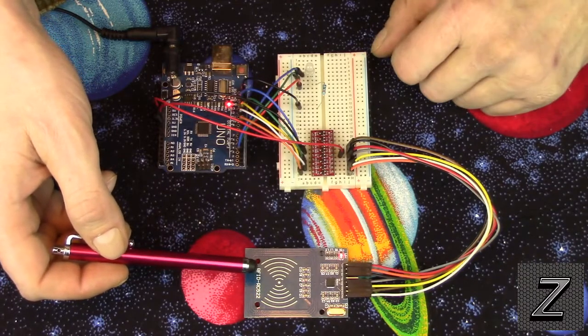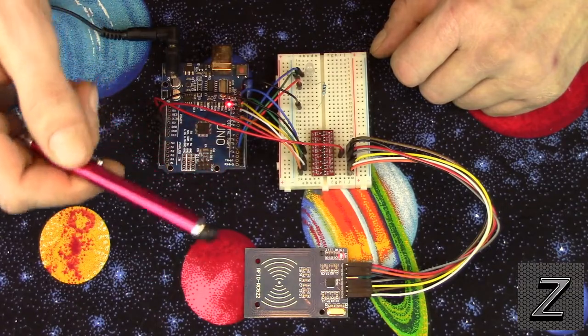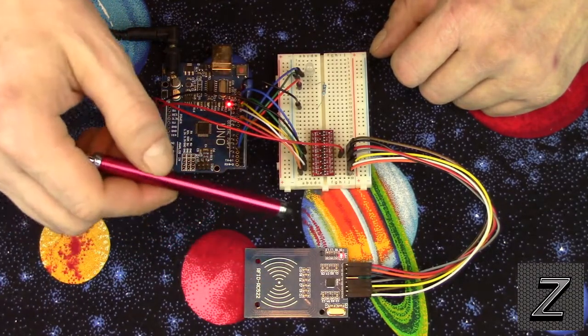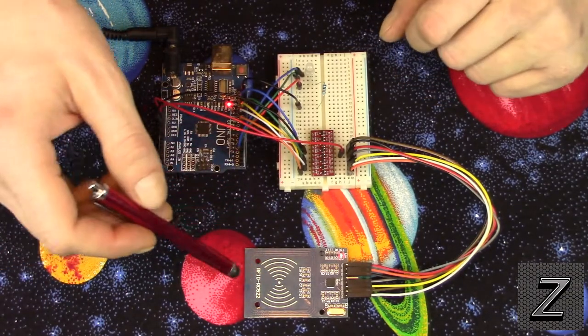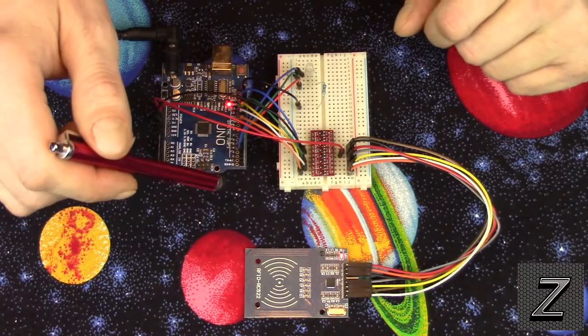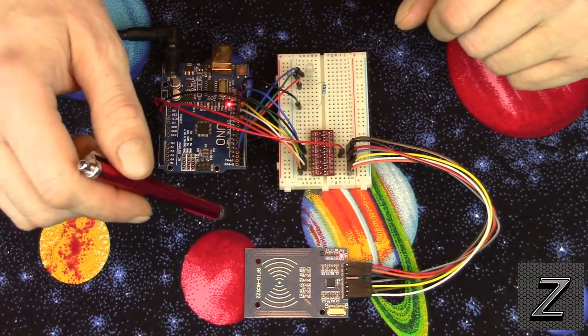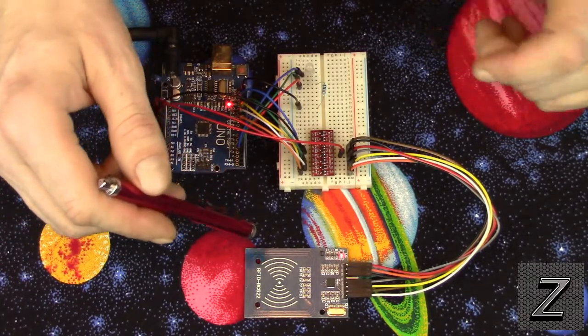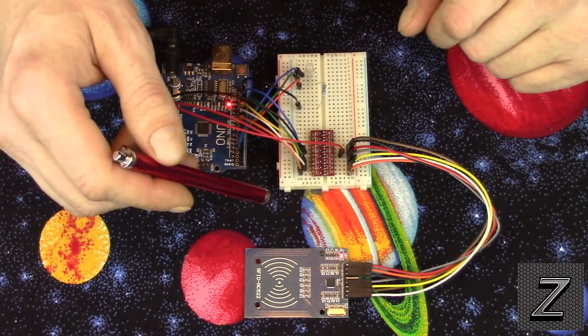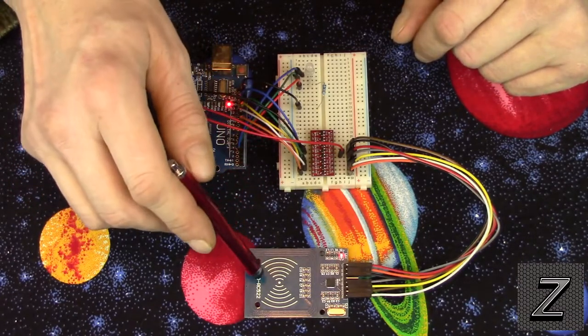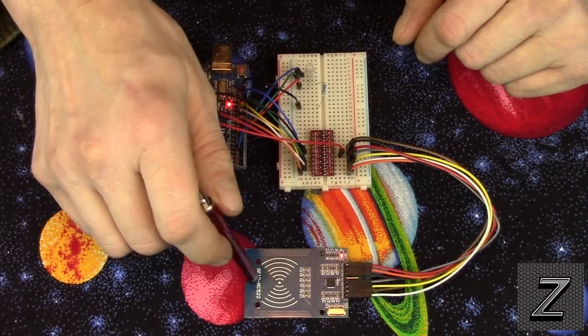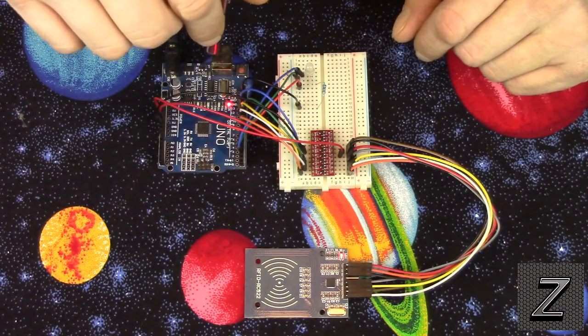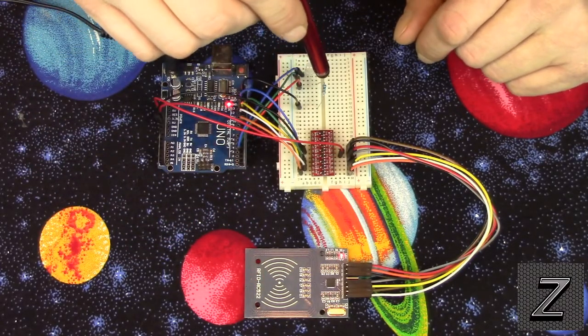But if anybody that's watching this has had different results, please leave a comment below, please. I would like to hear anything that you've done with these and your experience, just let me know. But from my experience with using 3.3 volt stuff with 5 volt, use a logic level converter.